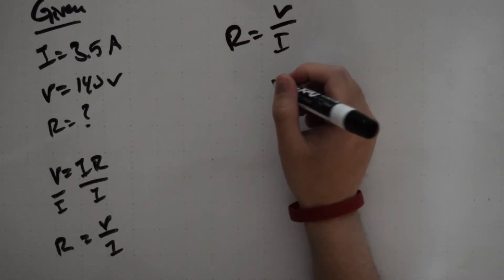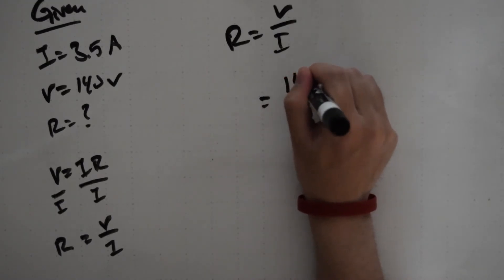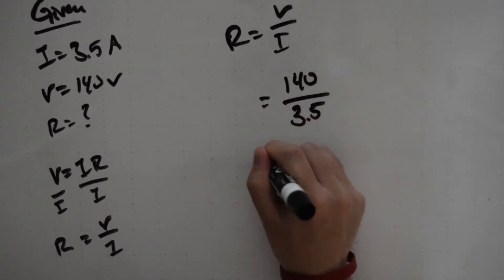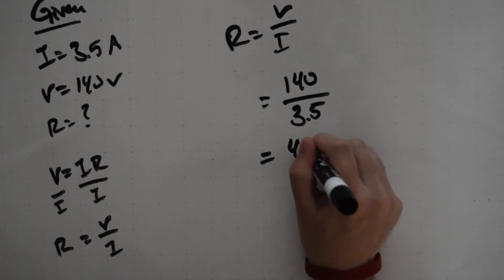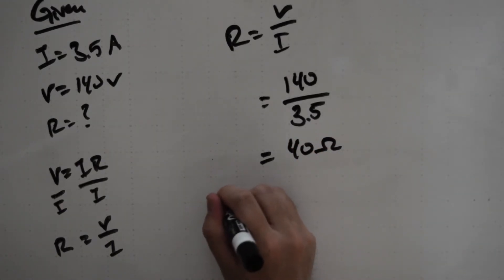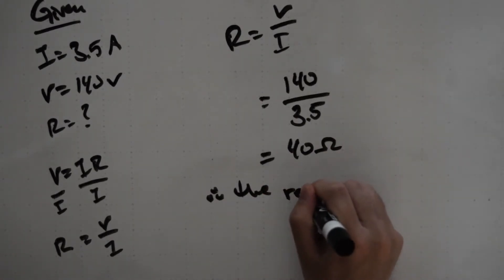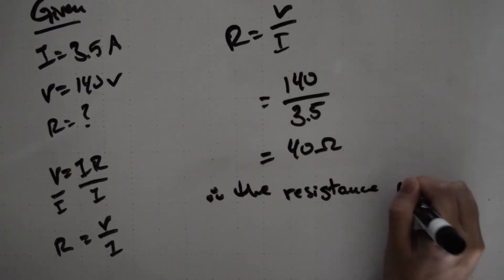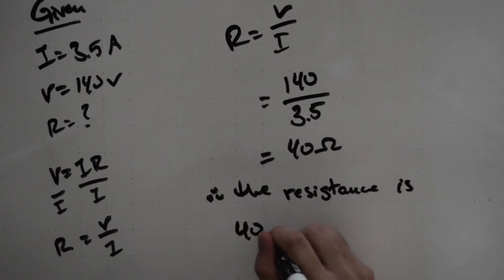We can now go ahead and plug in our givens. 140 volts divided by 3.5 amps is going to leave us with 40 ohms. Therefore, the resistance is 40 ohms.